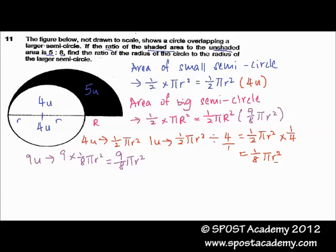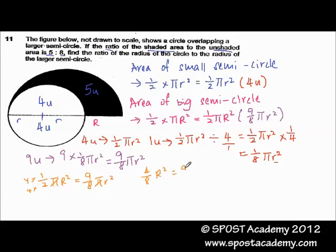The next step is to equate half pi big R squared equal to 9 over 8 pi small r squared. We can cancel off pi from both sides, and convert one half to 4 over 8 by multiplying by 4. So we get 4 over 8 R squared equal to 9 over 8 r squared, and with the same denominator, this means 4 big R squared equals 9 small r squared.